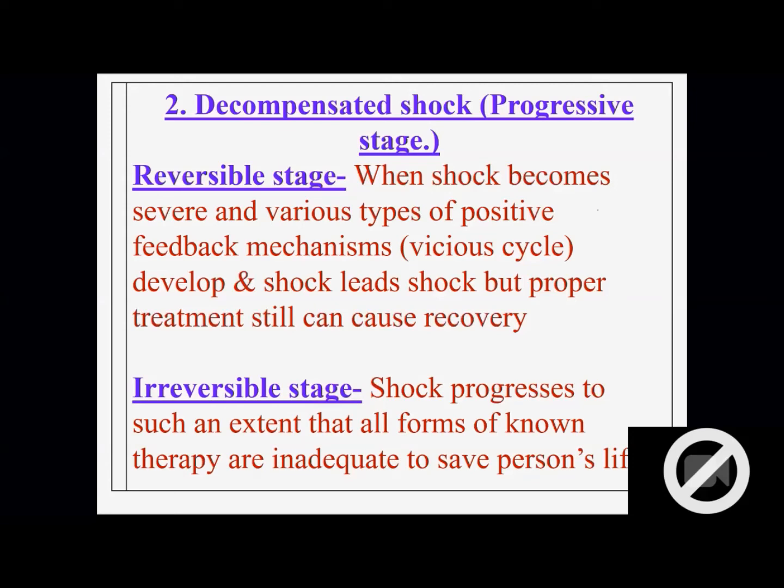And then we are having uncompensated or decompensated shock, progressive shock which leads to shock. Positive feedback or vicious cycle starts. We have seen two important vicious cycles. One between vasomotor center and heart. One vicious cycle is this. And one vicious cycle between heart and necrotic cell. Because of this vicious cycle, shock leads to shock.